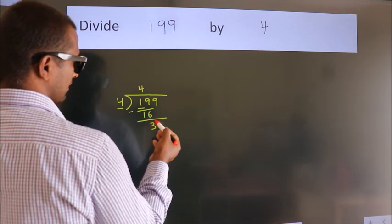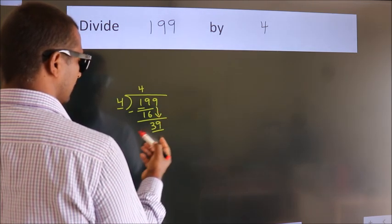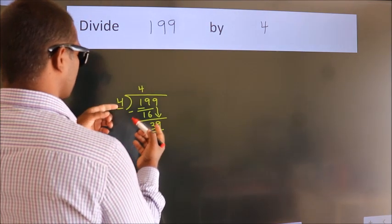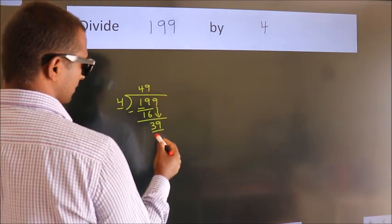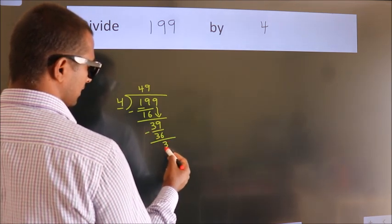After this, bring down the beside number. So 9 down. So 39. A number close to 39 in the 4 table is 4 times 9 equals 36. Now we subtract. We get 3.